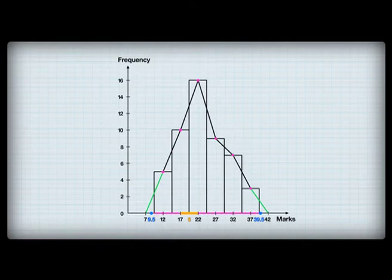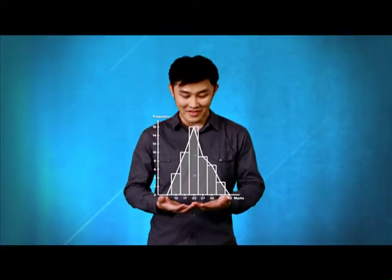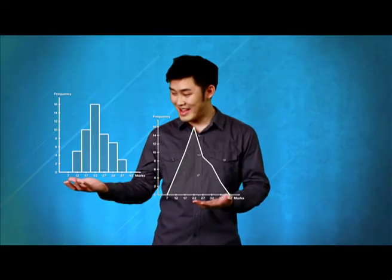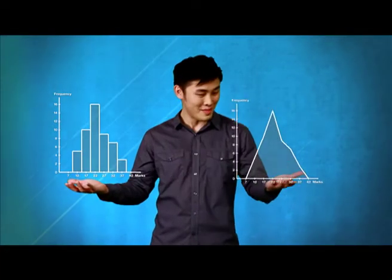Thus, the extension at the lower end is at 7, while at the upper end is at 42. And here you have it — a histogram and a frequency polygon.